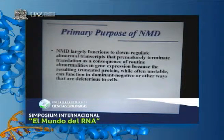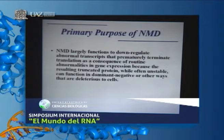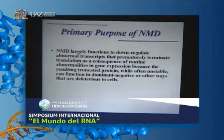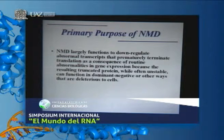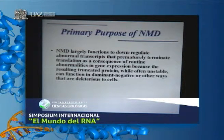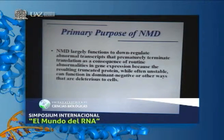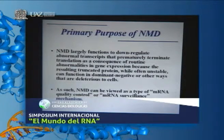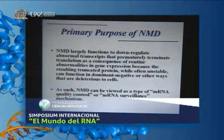Even though we covered NMD by studying human diseases, the primary purpose of NMD is to downregulate abnormal transcripts that prematurely terminate translation as a consequence of routine abnormalities in gene expression. The resulting truncated protein, even though it can often be destabilized by the cell because it's abnormal, can be stable enough to assume a dominant negative or other function that is deleterious to cells. So NMD can be viewed as a type of mRNA quality control or mRNA surveillance—think about translating ribosomes surveying the mRNA during the first round of translation.